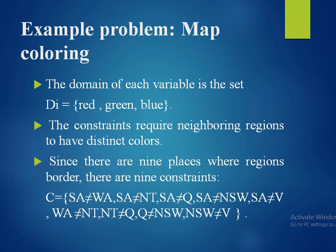The domain of each variable is Di = {red, green, blue}. The constraints require neighbouring regions to have distinct colours. Since there are 9 places where regions border, there are 9 constraints: SA≠WA, SA≠NT, SA≠Q, SA≠NSW, SA≠V, WA≠NT, NT≠Q, Q≠NSW, and NSW≠V.